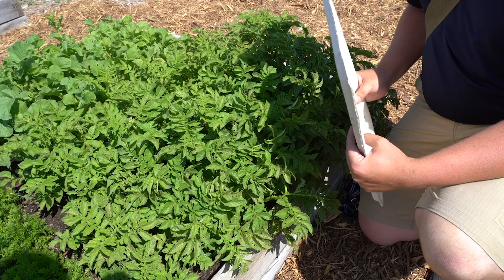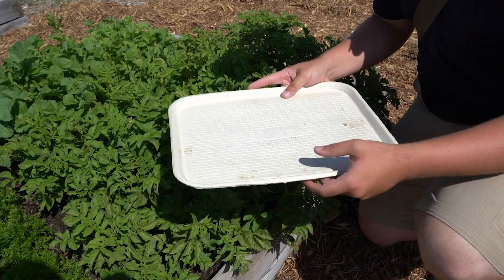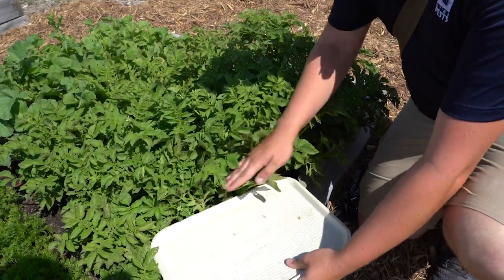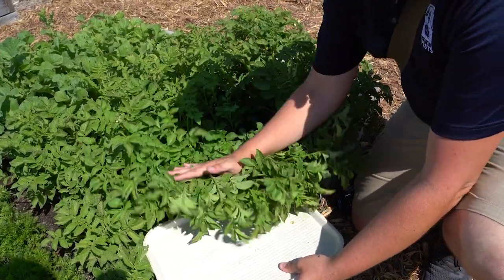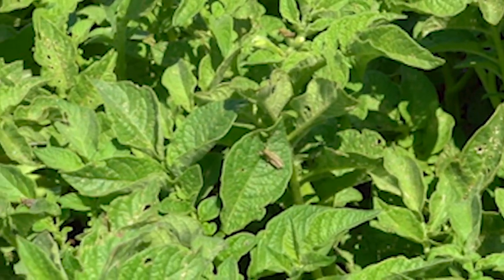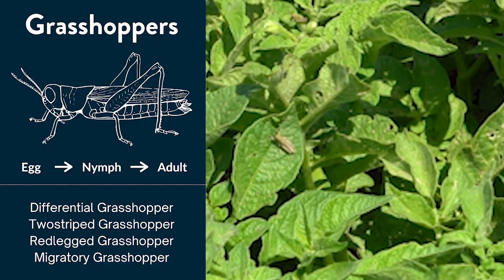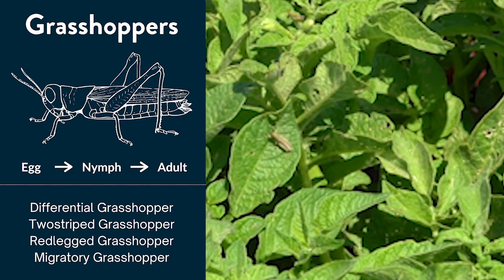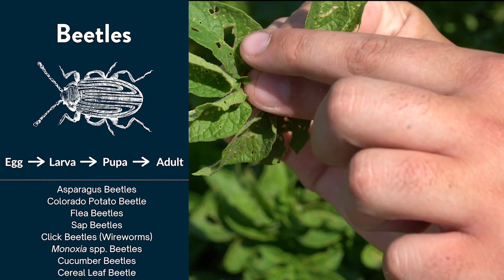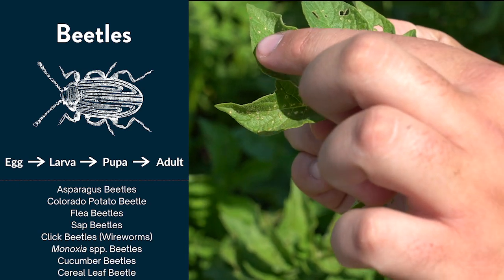One tool I use when I'm scouting in the garden is a beating tray. I use this cardboard one, but a white sheet of paper will work as well. I like to hold it underneath the foliage and then gently shake the foliage, and that will dislodge any pests that might be on the plant. On this potato plant, if you look closely, I found several different flea beetles. Grasshoppers are common garden pests with a wide host range; in the nymph and adult stages they have chewing mouthparts that can cause jagged holes on leaves. Larger beetles cause big feeding holes, while flea beetles cause tiny pitting damage.